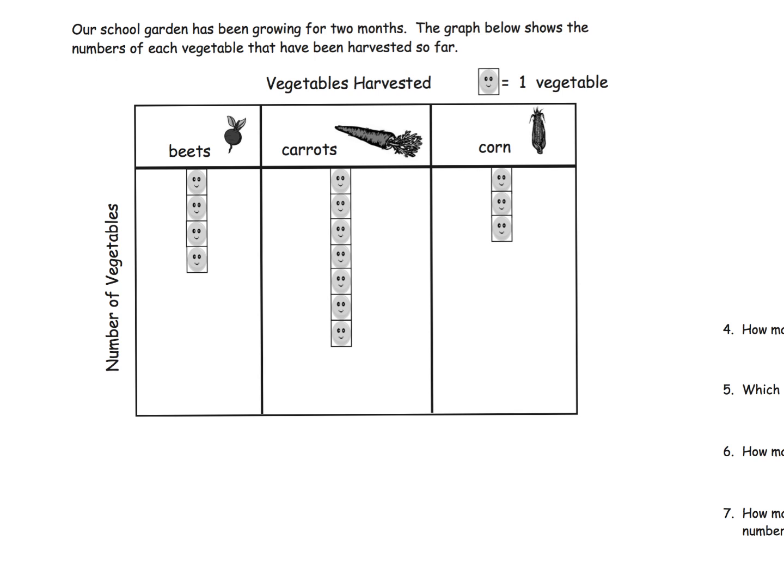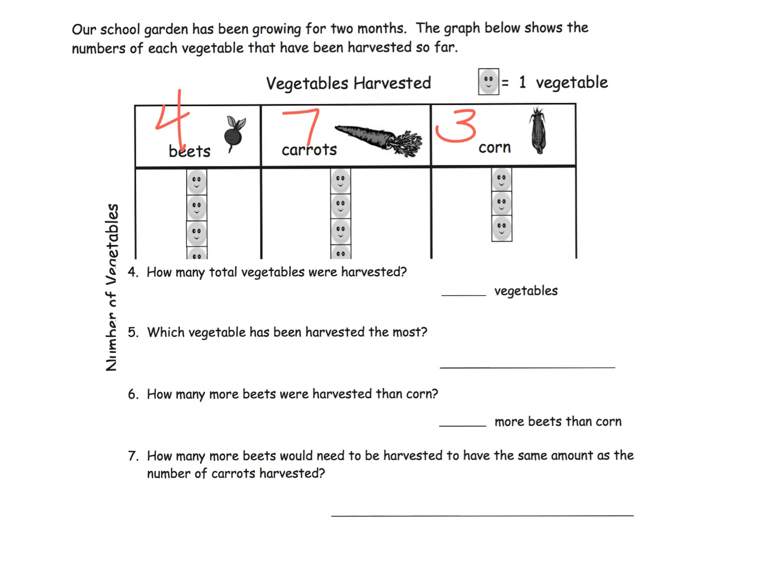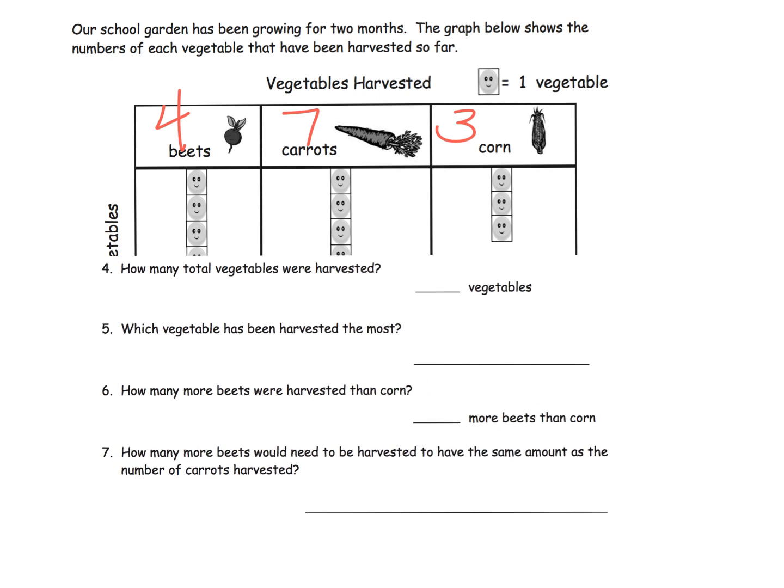Really quick one. It says our school garden has been growing for two months. The graph below shows the number of each vegetable that has been harvested so far. We can see that we have four beets, one, two, three, four, five, six, seven carrots, and three corn. Based on that, we can now answer a whole variety of questions.